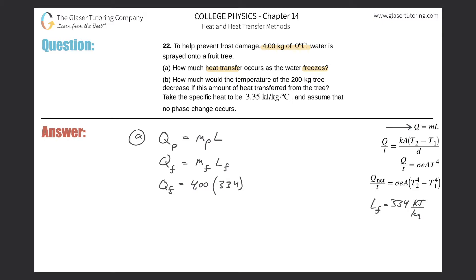334 kilojoules per kilogram. So the units are consistent here. Please just be aware that when you calculate this, 334 times 4, that's in kilojoules. So I'll just write it all out: